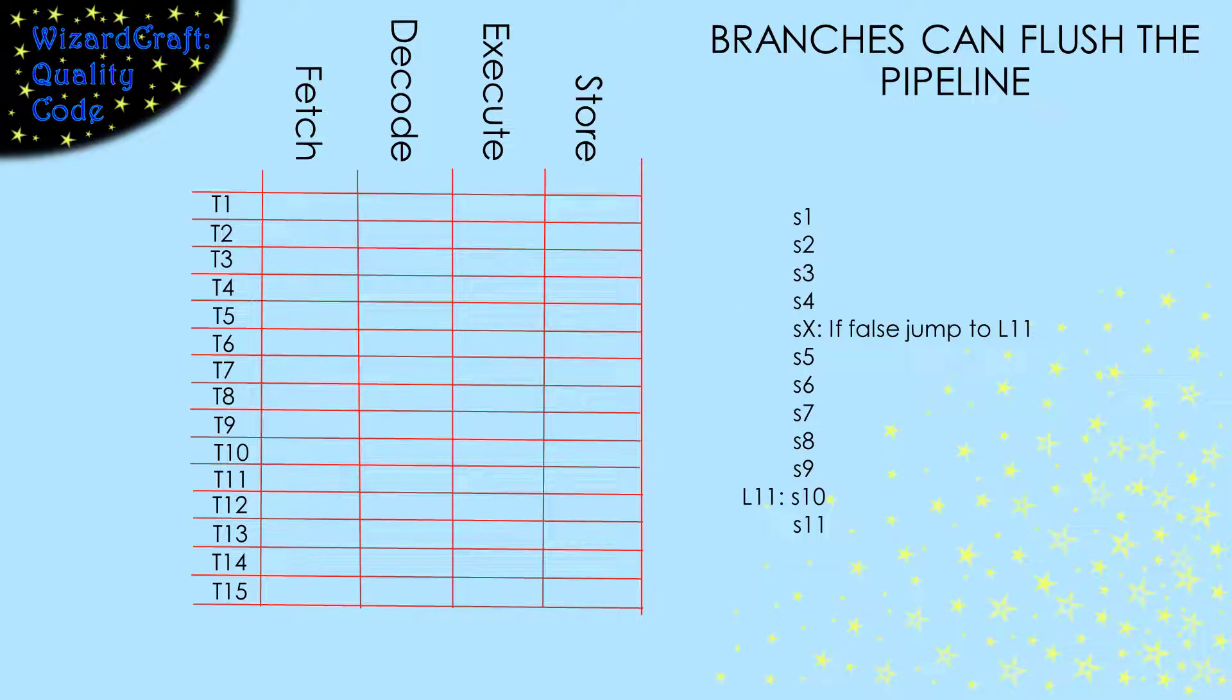But now, let's look at what happens if we have a conditional jump or branch instruction. This code is just a series of statements. I don't really care what they are, except that statement X is a conditional jump. Let's look what happens at that conditional jump. As we execute this code, the pipeline fills, and everything runs smoothly until statement X gets to the memory access phase.